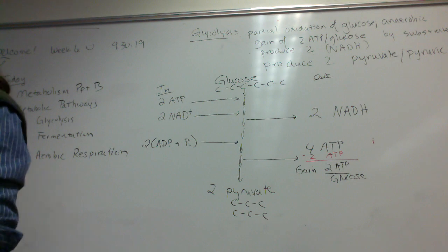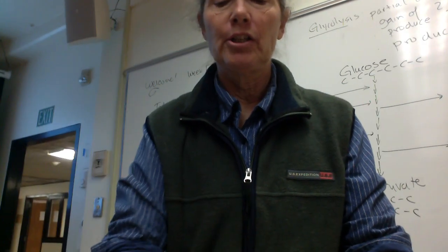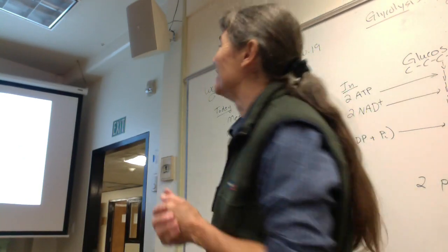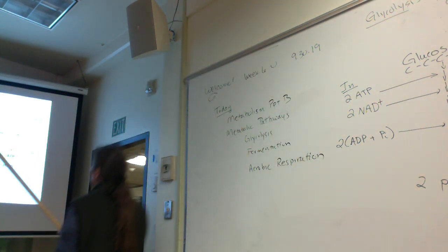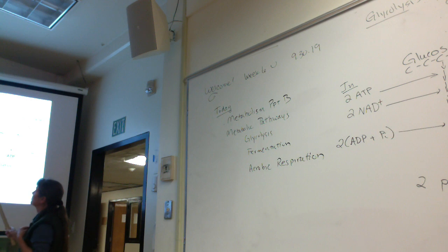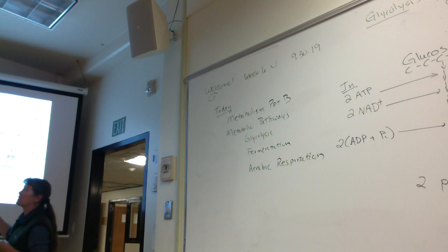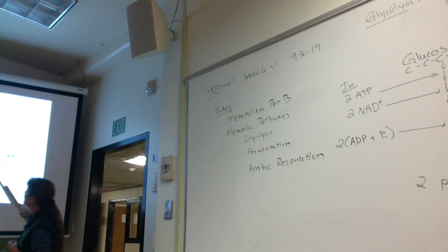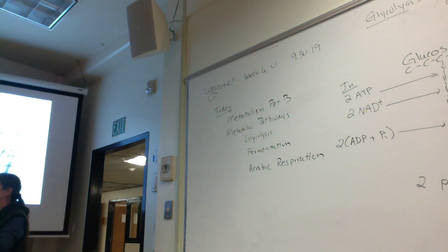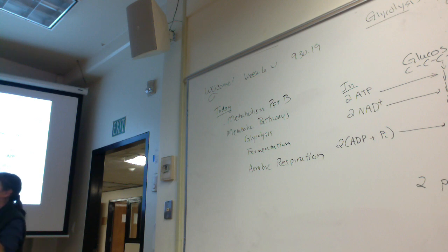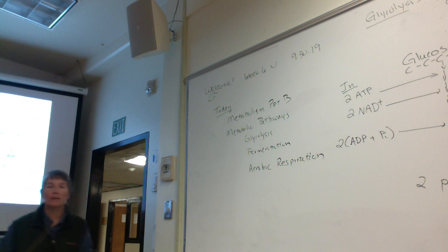This is a cartoon of substrate-level phosphorylation. With substrate-level phosphorylation to make ATP, we have some phosphorylated molecule — phosphorylated means it has a phosphate group. We transfer that phosphate group from this phosphorylated molecule to ADP, and that makes ATP. Don't get too hung up on this right now. The reason I mention it is that when we get to aerobic respiration, most of the ATP is made by a totally different process.